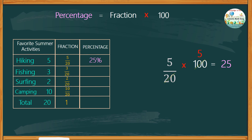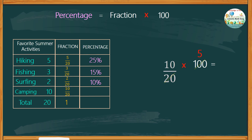For fishing, we have 3 over 20. Just change the numerator to 3, then multiply by 5, where we get 15, or 15%. Do the same for surfing — change the numerator to 2, multiply by 5, and we get 10, or 10%. For camping, change the numerator to 10, then multiply by 5, and we get 50, or 50%.